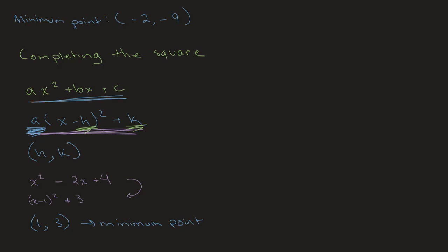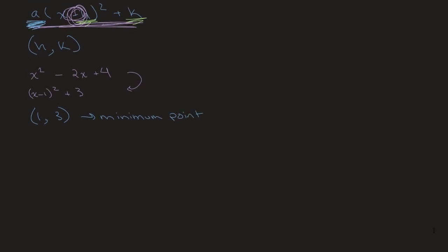It's also important to note that this minus sign inside the equation is very important and where a lot of students often make mistakes. For example, if we had (x plus 2) squared plus 3, the minimum point would not be (2, 3) — it would actually be (negative 2, 3). That's because this equation is the same as (x minus negative 2) squared plus 3, and the minus sign is a crucial part of the equation.